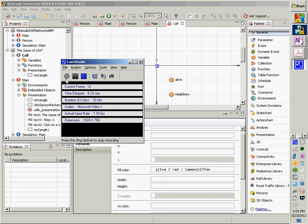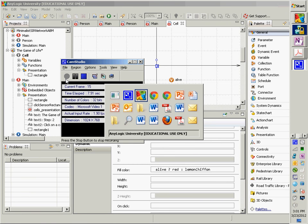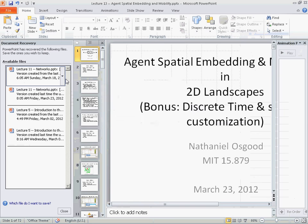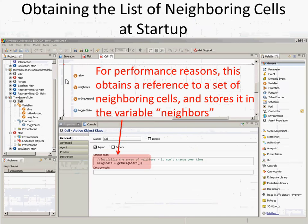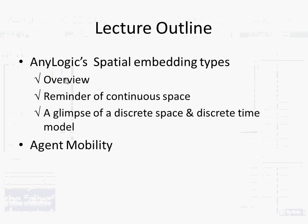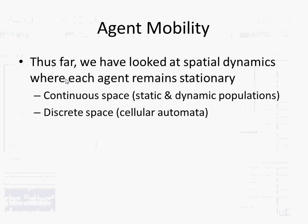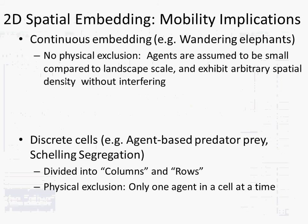What we're going to be talking about now is an extension of what we've been doing, but specifically talking about agent mobility. We talked about how agents are embedded within space, but we haven't really discussed movement of agents. The model we looked at for discrete space, discrete time: cells are born, they live, and they die at the same location. We want to ask how to generalize it. We're going to look at this in continuous space and in discrete space, and we're going to look at two different models of each one.